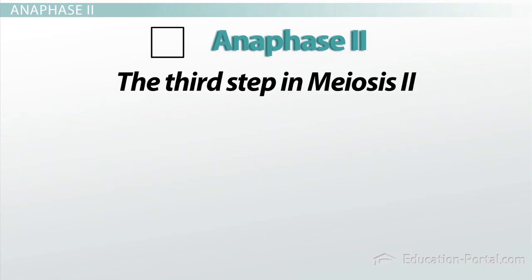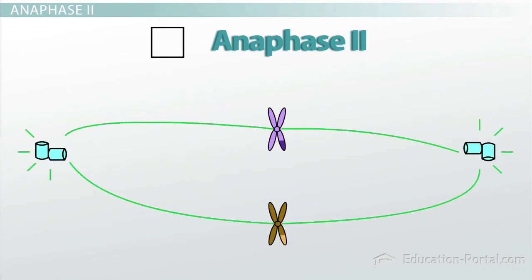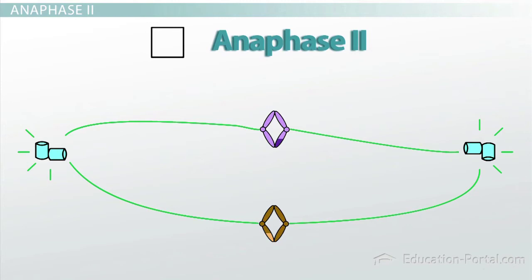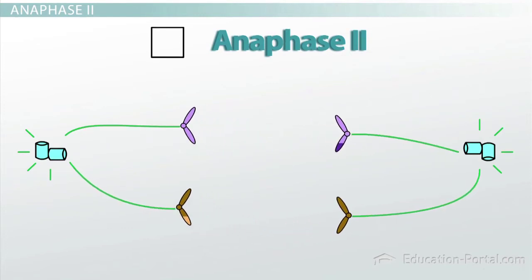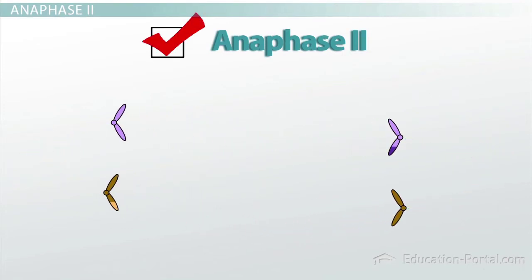Anaphase II is the third step in meiosis II. Like mitosis, anaphase II is initiated when the protein separase cleaves the protein holding the chromatids together. Once this physical connection is broken, each chromatid is free to move to its respective pole.